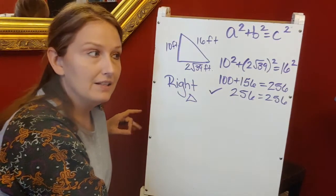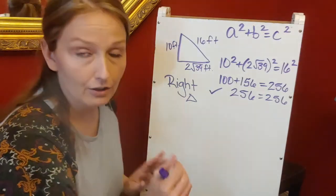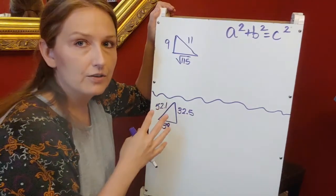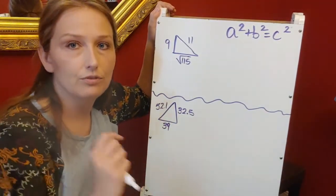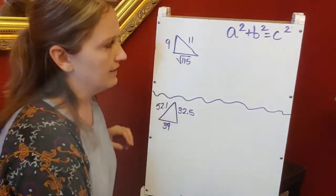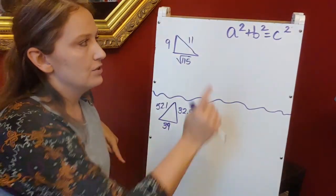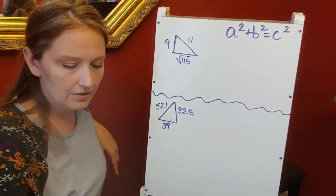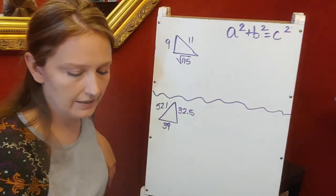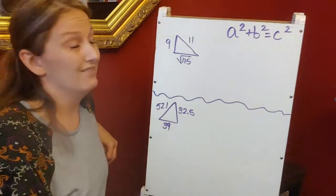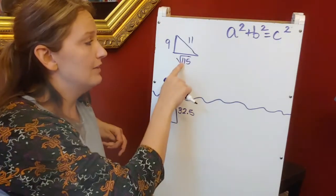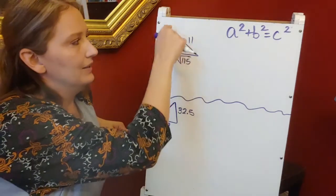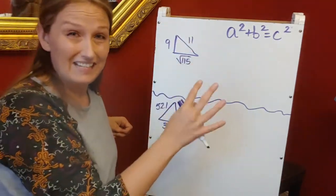show you what happens if that math doesn't check out and whether triangles are acute or obtuse. I've got two other triangles here. I'm still checking, still using Pythagorean theorem. Looking at this top triangle, the square root of 115 is about 10.7, which is less than 11, so I know 11 is my longest side, my C.